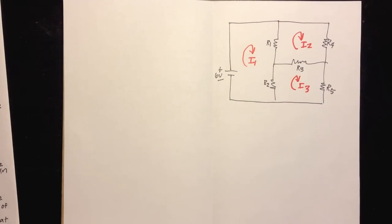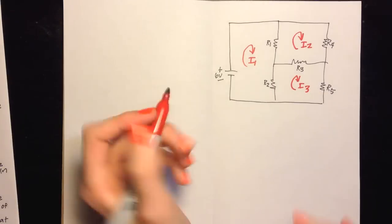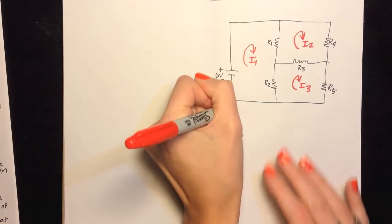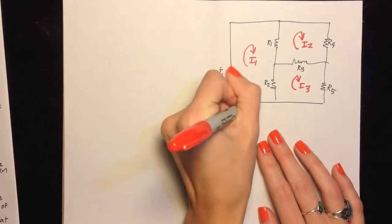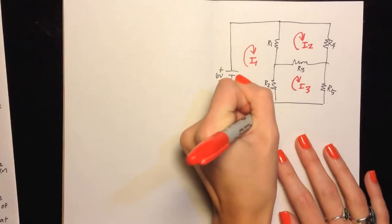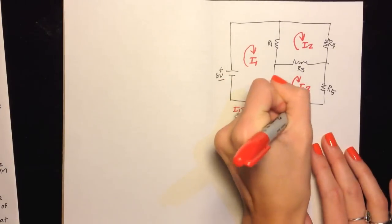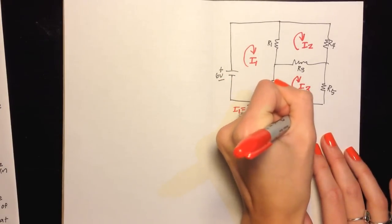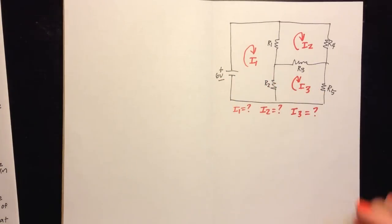Step two: determine how many mesh currents are known. For this circuit, we don't know any of the mesh currents yet. So we're going to write I1 equals unknown, I2 equals unknown, and I3 equals unknown.